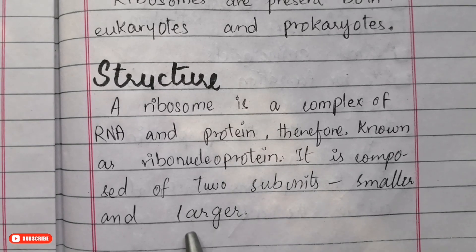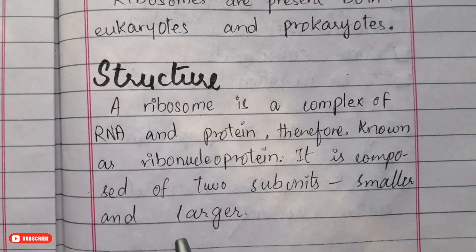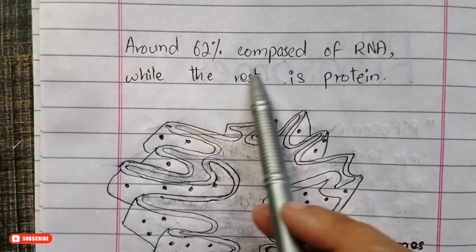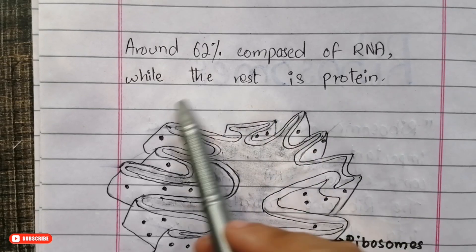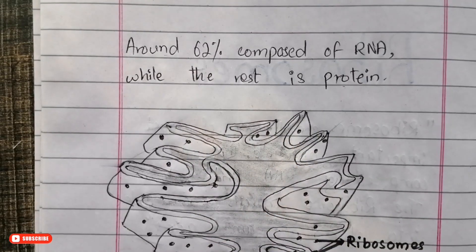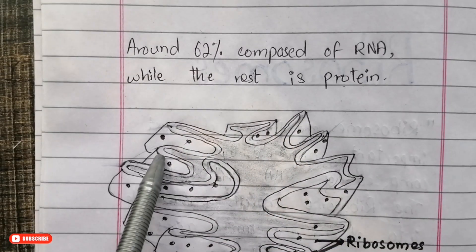The ribosome is composed of two subunits: a smaller subunit and a larger subunit. These two units combine together to form the complete structure of the ribosome. Approximately 62 percent of the ribosome is composed of RNA, while the rest is protein.